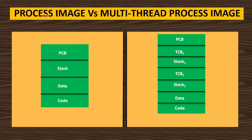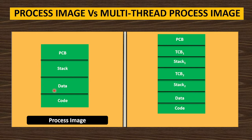Now we will see the process image versus the multi-threaded process image. A process image has a single process with a Process Control Block containing all process information, a stack storing local variables, function arguments, activation records, and temporary variables, a data section for global and static variables, and a code section for machine instructions. So the process image has these four parts.